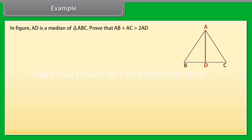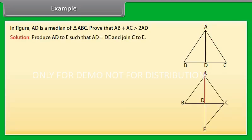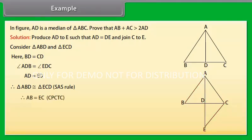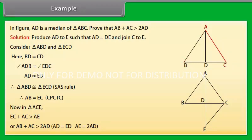Example: In the figure, AD is a median of triangle ABC. Prove that AB plus AC is greater than 2AD. Solution: Produce AD to E such that AD equals DE and join C to E. Consider triangle ABD and triangle ECD. Here, BD equals CD, angle ADB equals angle EDC, and AD equals ED. Therefore, by SAS congruence rule, triangle ABD is congruent to triangle ECD. Therefore, AB equals EC by CPCTC. Now, in triangle ACE, EC plus AC is greater than AE, or AB plus AC is greater than 2AD, because AD equals ED implies AE equals 2AD.